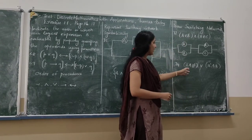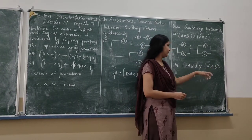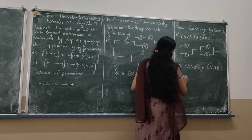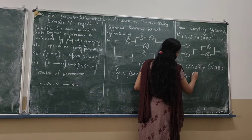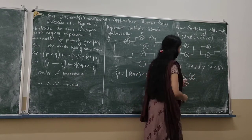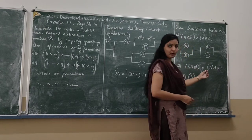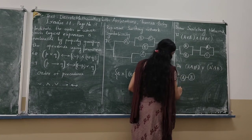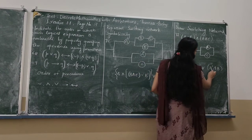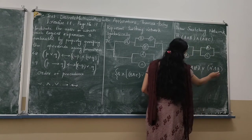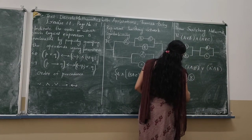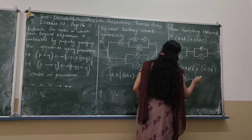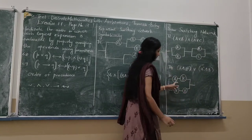Next, question 7b: A and C-dash or A-dash and B. Since A and C-dash are on the same line, we draw them using and. Then this network and the next network are connected by or, hence they are parallel. Here A-dash and B lie on the same line, so A-dash and B are drawn in series. This network and the previous network are parallel, so we draw them in the parallel branch.